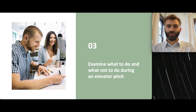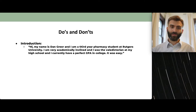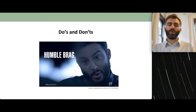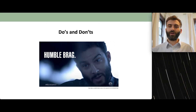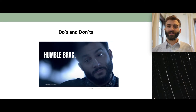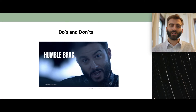Now let's look at what to do and what not to do during an elevator pitch. Consider this introduction: 'Hi, my name is Dan Greer. I'm a third-year pharmacy student at Rutgers University. I'm very academically inclined. I was valedictorian at my high school. Currently I have a perfect GPA. It was pretty easy.' What's wrong with that? You don't want to come across as arrogant or braggy. You are highlighting your skills, but use open, positive body language, smile, and choose your words carefully so you don't come across that way.